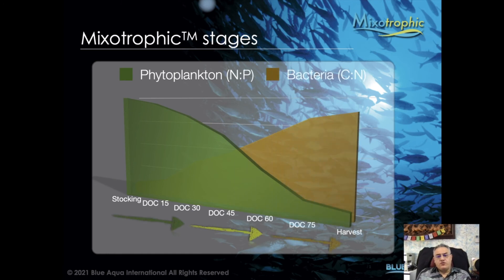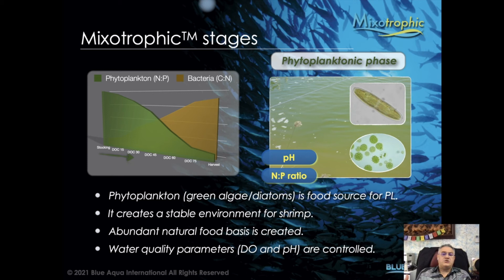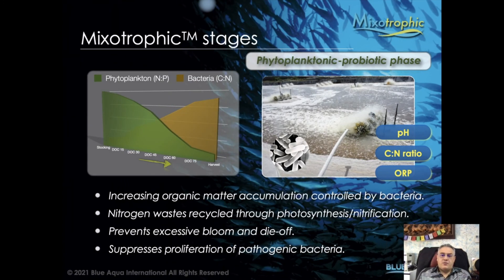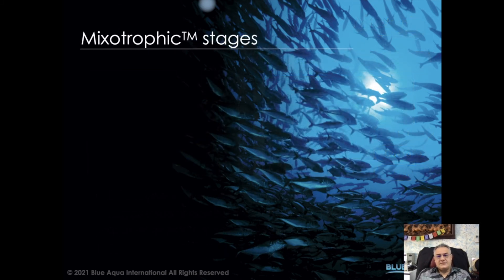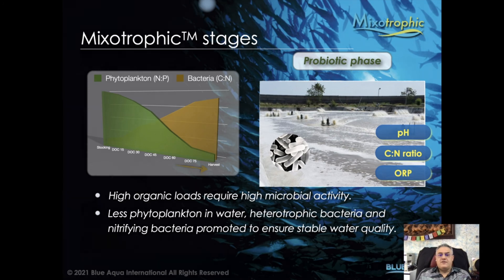The mixotrophic system has three stages over a typical culture period of 100-plus days. The first phase is the phytoplanktonic phase, involving phytoplankton bloom, pH, and nitrogen-to-phosphorus ratio — at this stage animals are small and need protection from UV sunlight through a good phytoplankton bloom. Moving toward the middle of the culture, we reduce phytoplankton and increase bacteria — this is the phytoplanktonic-probiotic phase, where pH and C:N ratio are very important. The last stage is the probiotic phase, with pH, C:N ratio, and ORP all critical.